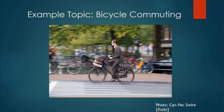In order to get a better understanding of these three broad types of theory, let's apply them to one particular topic. We're going to look at bicycle commuting — biking to work. We're going to imagine three hypothetical papers that were all written in and about the same hypothetical city.